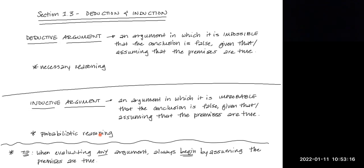So if we look at those definitions more carefully, we can see that a deductive argument is an argument in which it is impossible that the conclusion is false, given that or assuming that the premises are true.